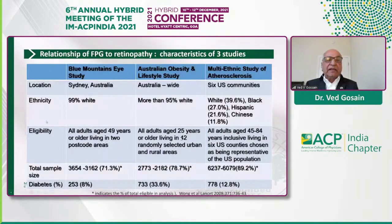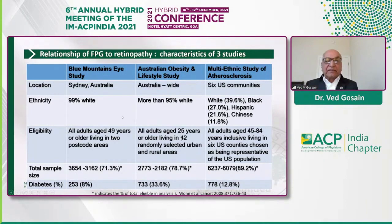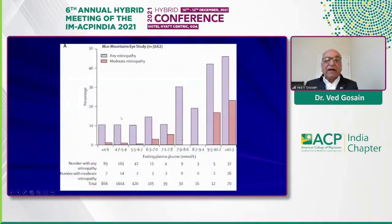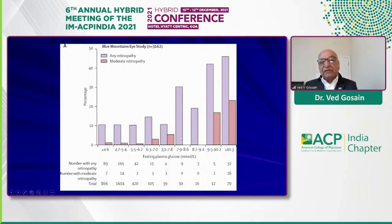These are three studies that have looked at the relationship of fasting plasma glucose to retinopathy, with fairly large numbers — 3,000, 2,000, and 6,000 in a U.S. study, and two Australian studies. If you look at the prevalence of retinopathy with plasma glucose levels below 7 mmol/L — which is where we make a diagnosis of diabetes — you already have some degree of retinopathy, and as glucose levels go up, so does retinopathy.